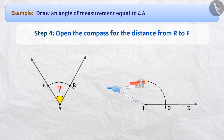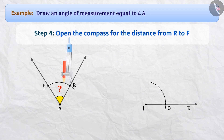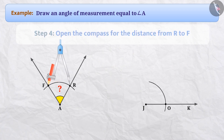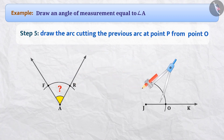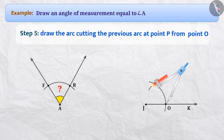Step 4: now we will place the pointed end of the compass at point R and open the compass for the distance from R to F. Step 5: without changing the distance of the compass, we will place its pointed end at point O and draw the arc cutting the previous arc at point P.